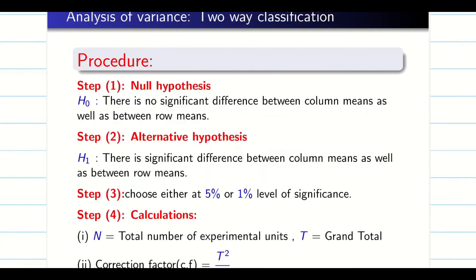Procedure. As usual, H0 is going to be no significant difference between column means. Since we are going for two-way ANOVA, we are going to analyze two sides, both the columns and rows. So we write there is no significant difference between column means as well as row means. H1 is going to be just opposite.